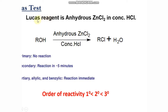In this test, alcohols are treated with a Lucas reagent. The Lucas reagent is anhydrous zinc chloride in concentrated HCl. All three types of alcohols undergo this reaction at different rates.